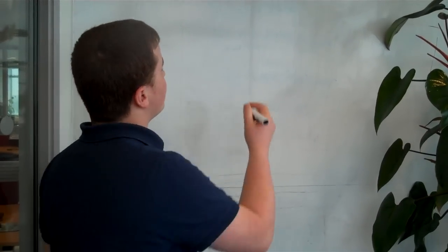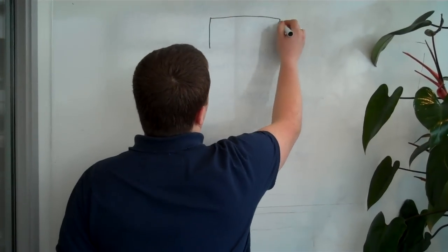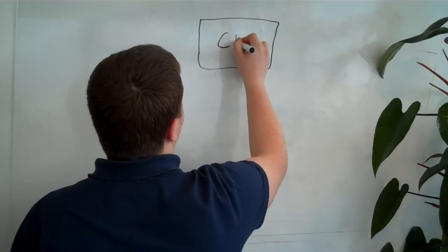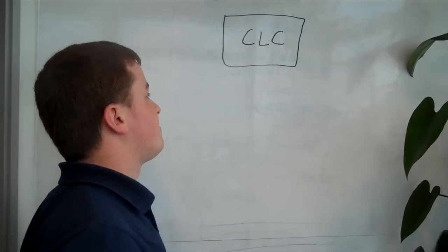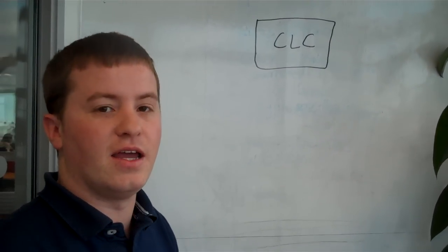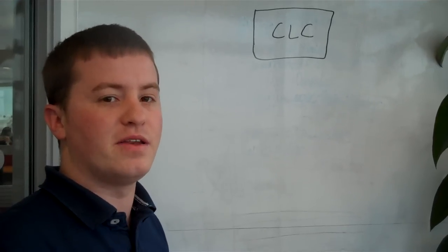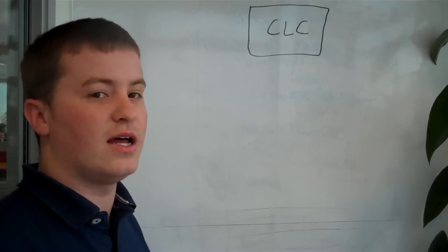This consists of a few components. Firstly, we have the cloud controller, which we call the CLC. This provides an API interface and a web interface for you to control resources in your cloud.